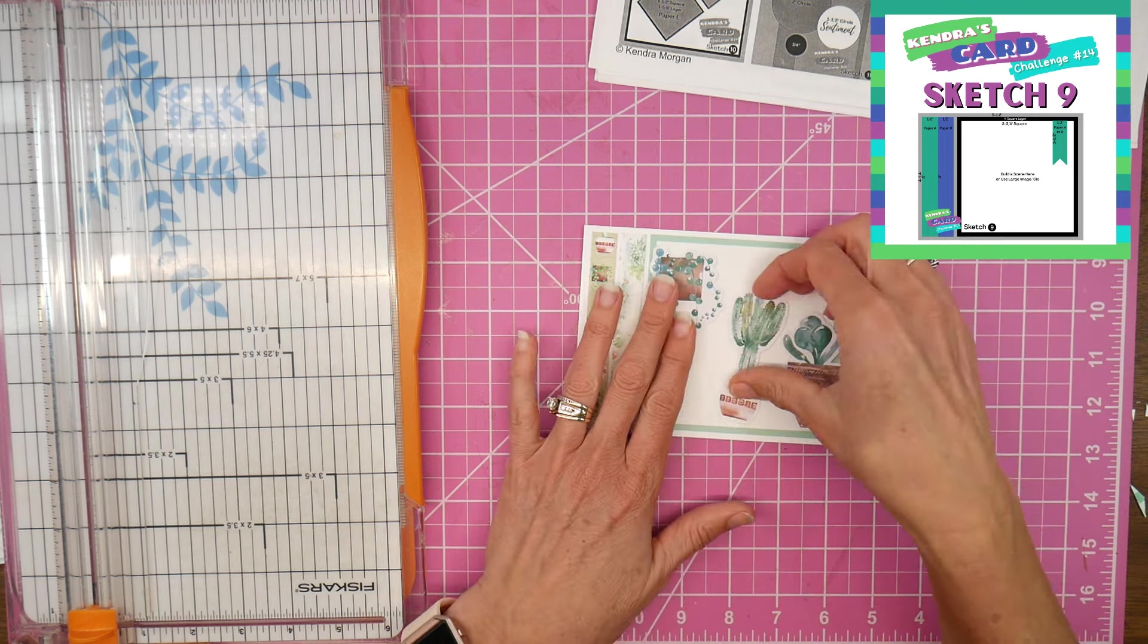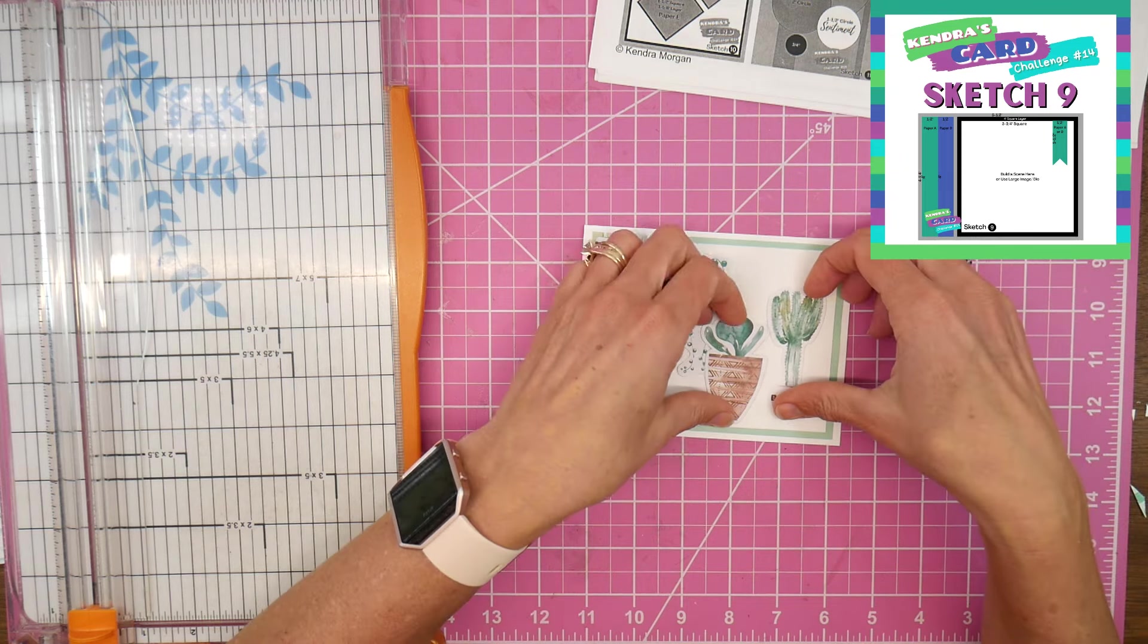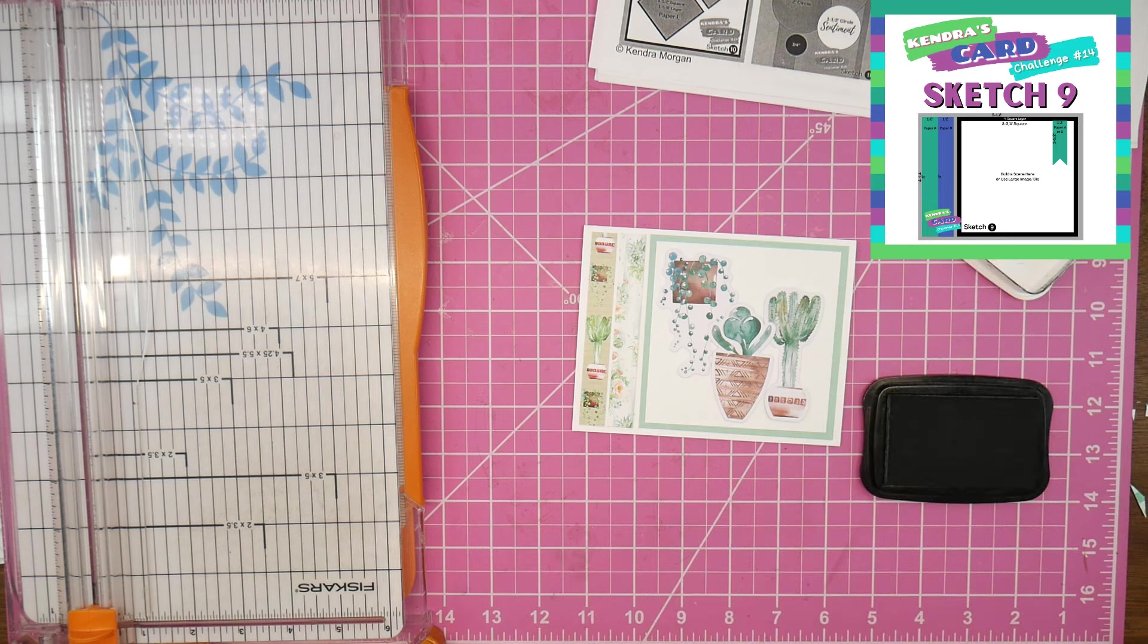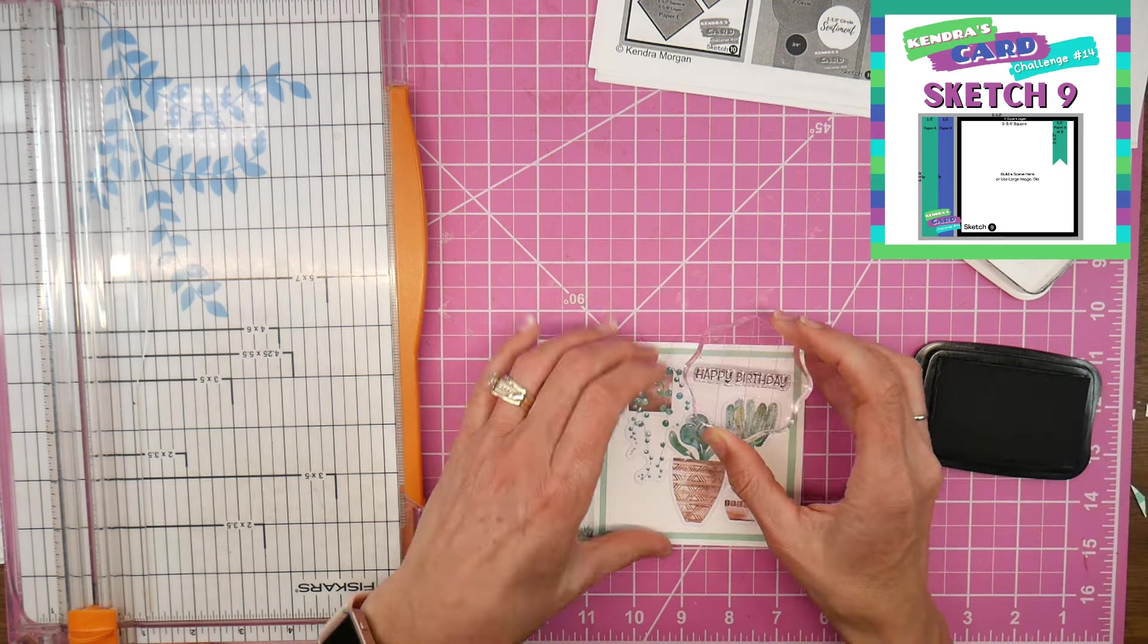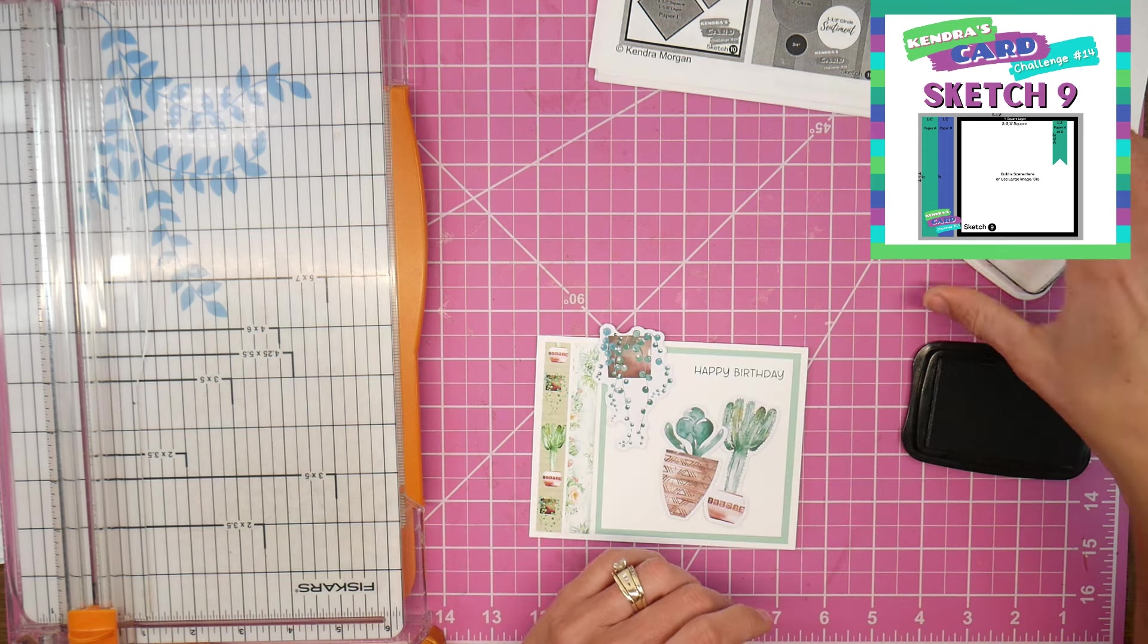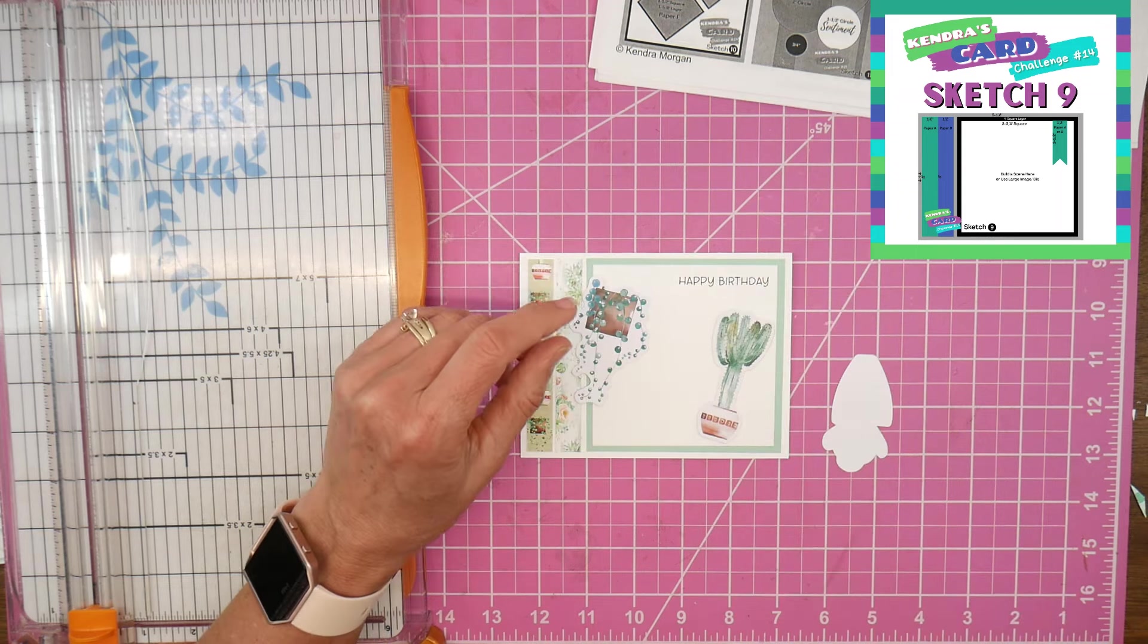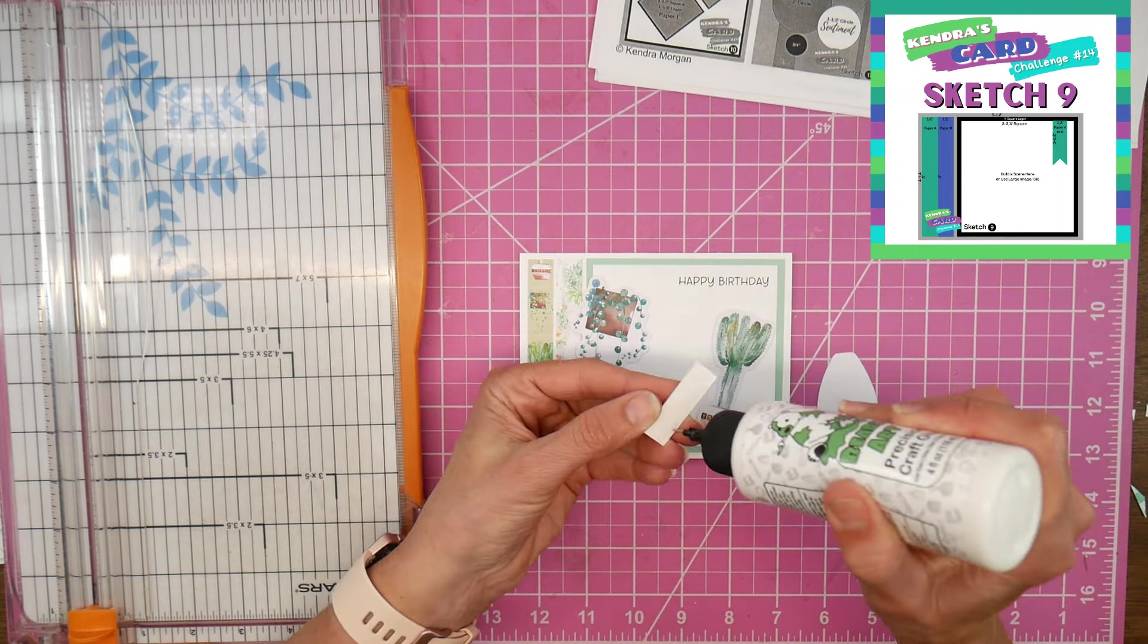So like I said, one of the reasons I chose this particular sketch was because I could play with the ephemera. So I chose three pieces that kind of worked well together. That succulent on the far right there actually is in the pattern paper strip on the far left, so it kind of all ties together. And I was brave and decided to stamp my happy birthday sentiment directly onto the white cardstock there.